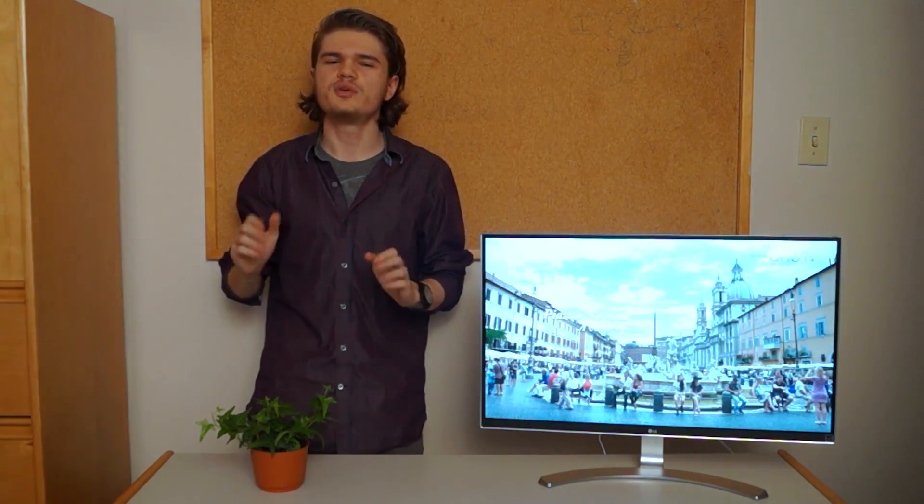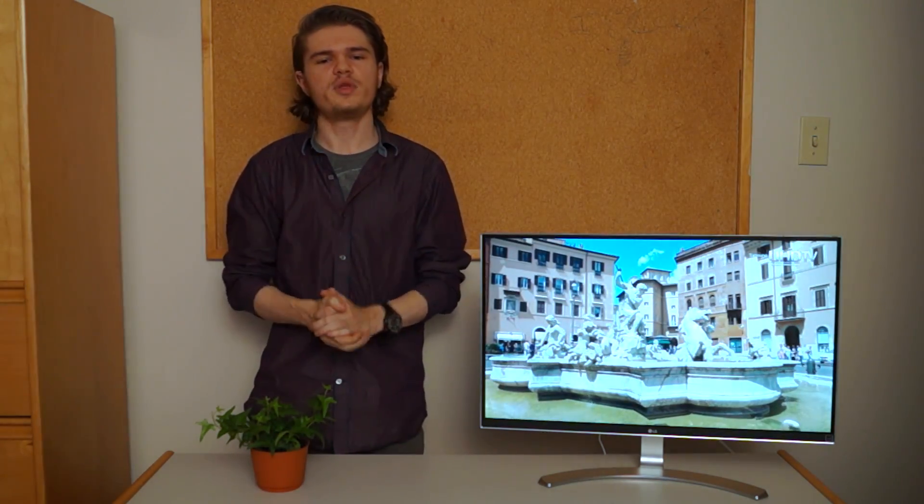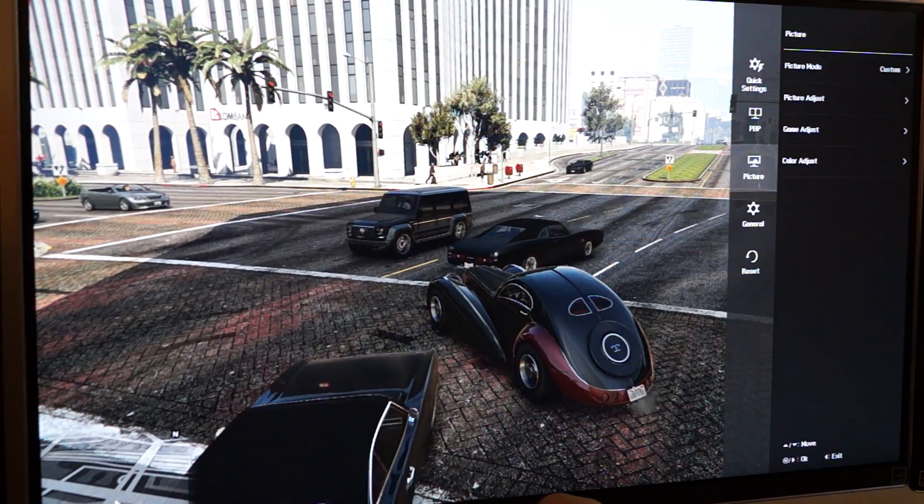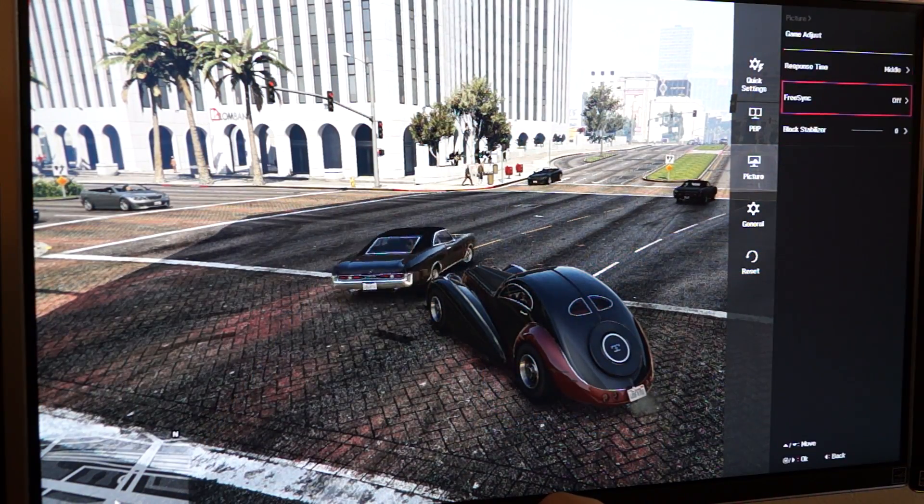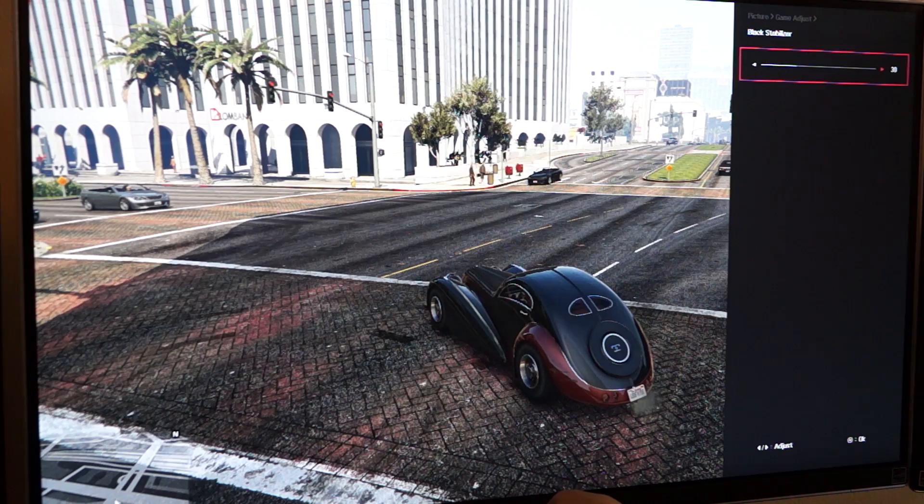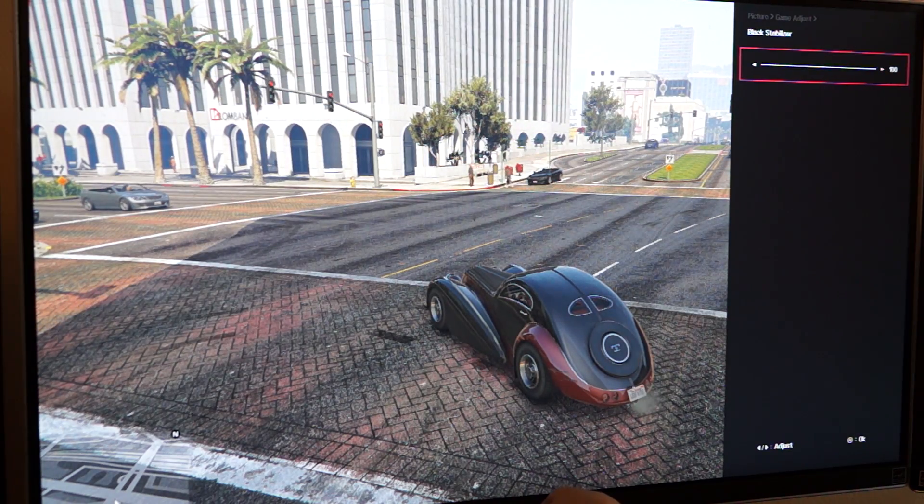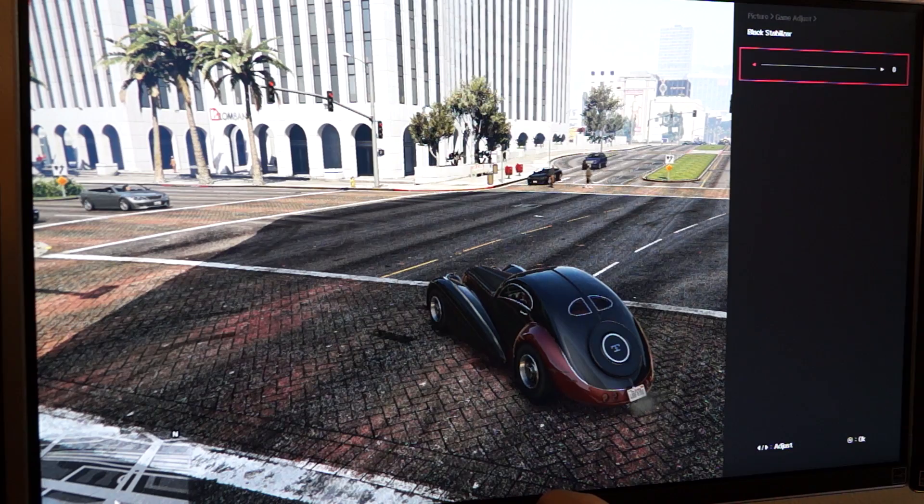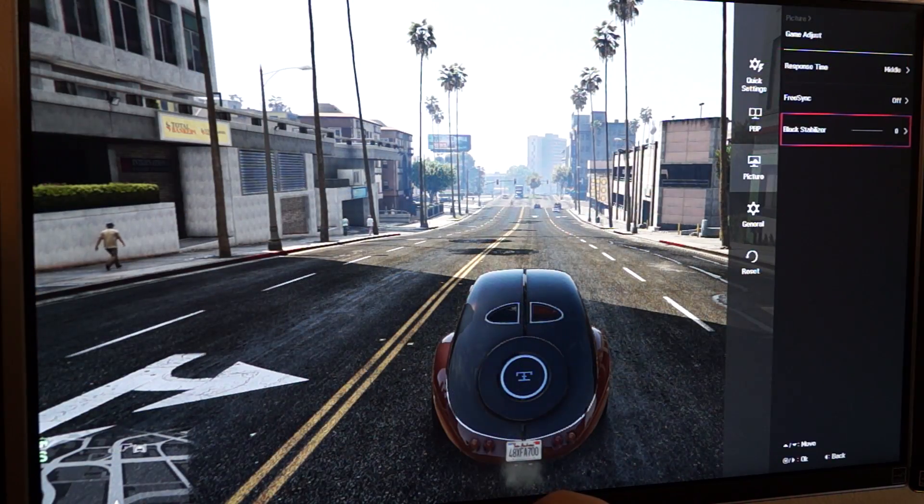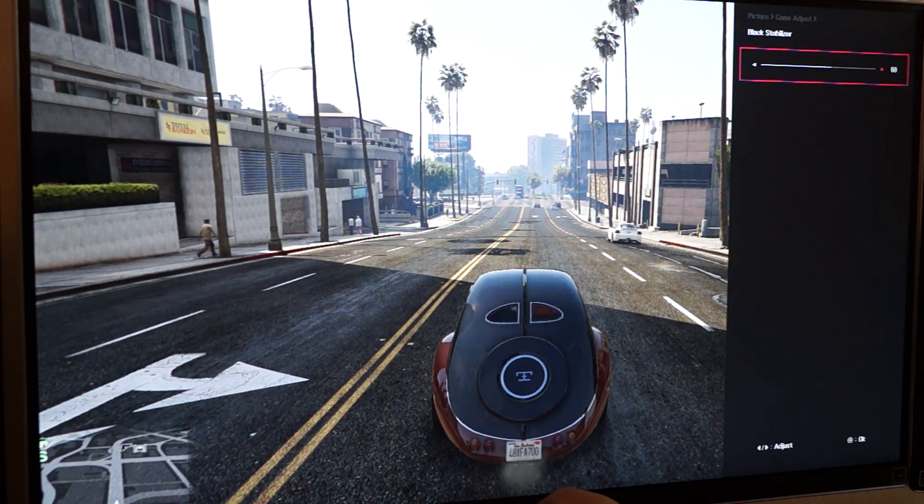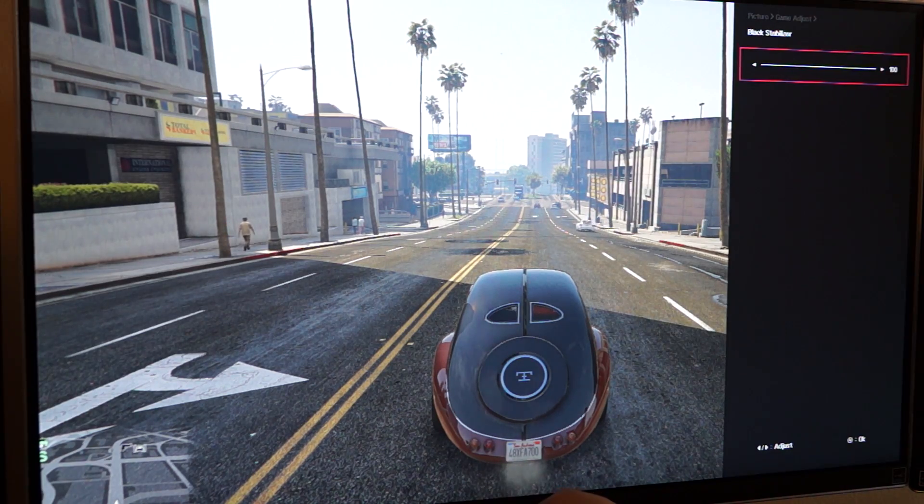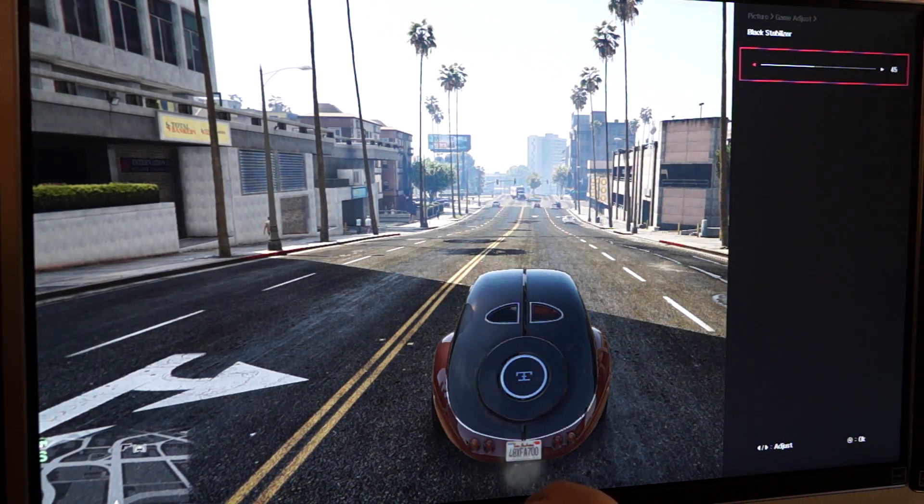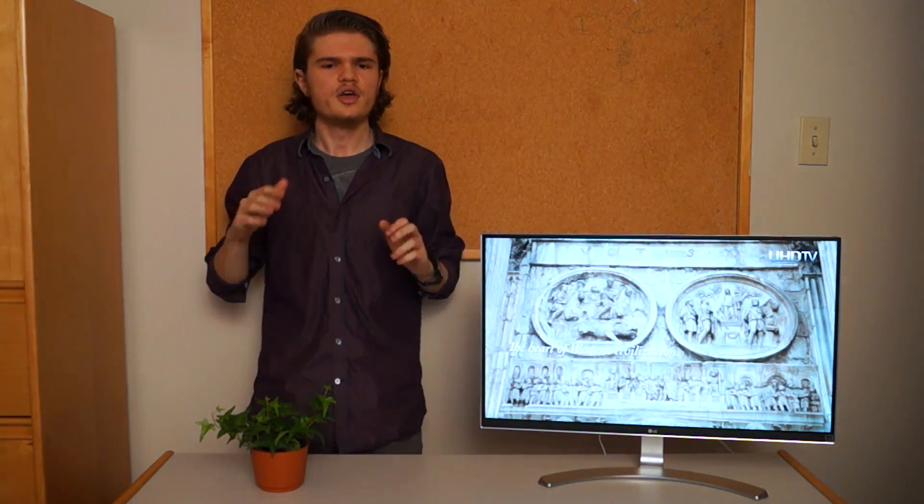Moving on to software, the 27UD68 packs in some rather questionable features, starting off with the black stabilizer. This increases the visibility of dark scenes and is meant for gaming. Although, for reasons unknown, LG thought it would be a good idea to ship the monitors, at least my model, with this being 50% on, making all of my content look incredibly washed out. That is, until I found it and turned it off, and I noticed the difference immediately, as the blacks had a much truer feel to it.